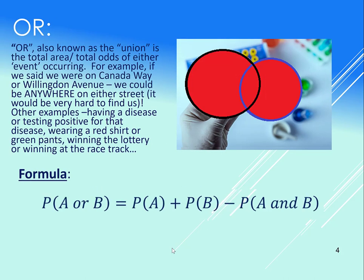Now, the OR, that's also known as the Union, so you'll see here it is this whole red area. All of this. So it's the odds of being in either of the areas, or having either event occur. For example, if we were on Canada Way or Willington. Let's say you're trying to tell somebody where you are, and you're saying, I'm either on Canada Way or I'm on Willington. Well, you could never find us. It would be very hard, because we could be anywhere on either street.